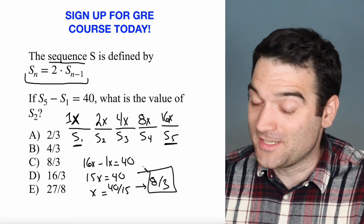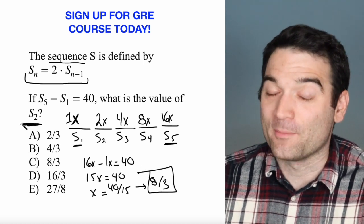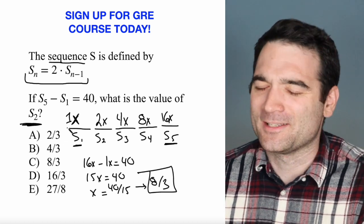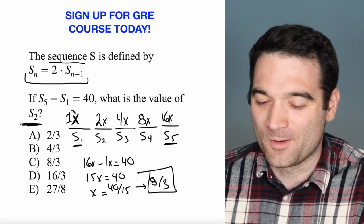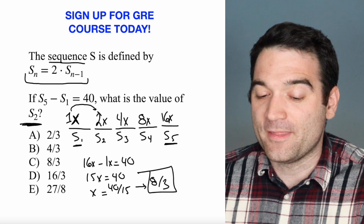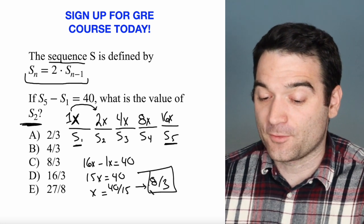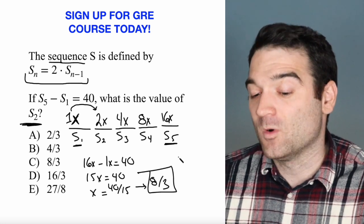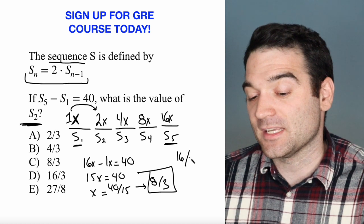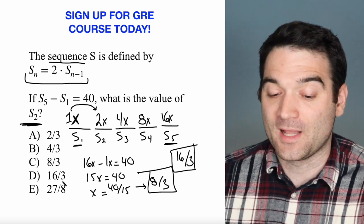But I'm not quite done. Because what am I looking for? I'm looking for the second term in the series. As if it wasn't enough to go all that way. We've got to do one more step. So I just need to multiply this one by 2. The first term is 8 thirds, so the second one is going to be 16 over 3. That's 8 thirds multiplied by 2.